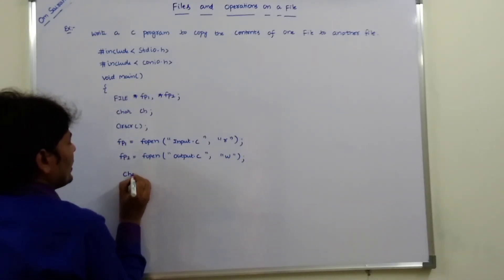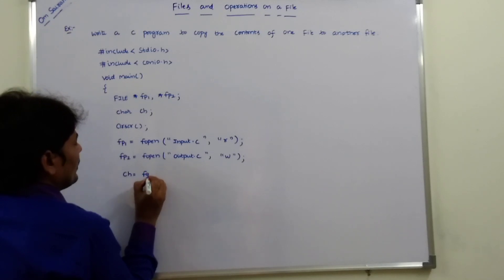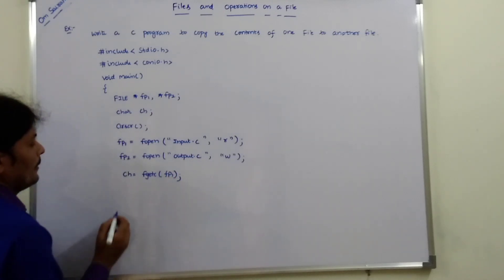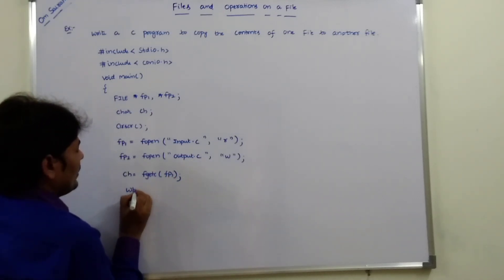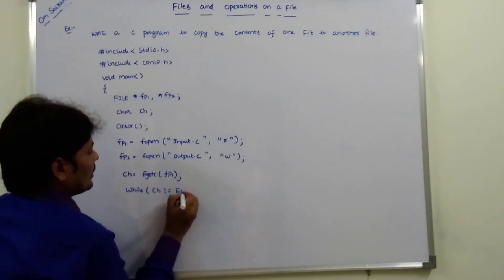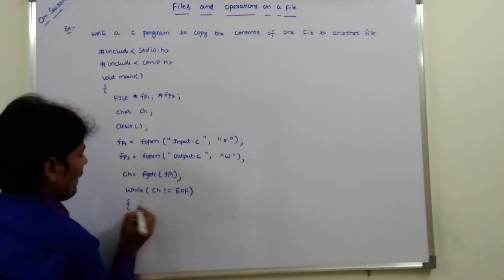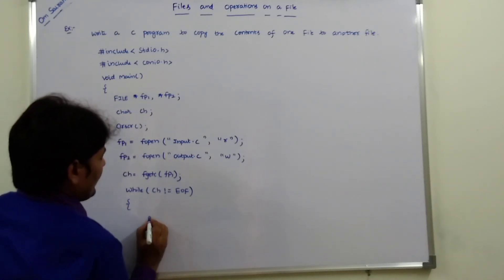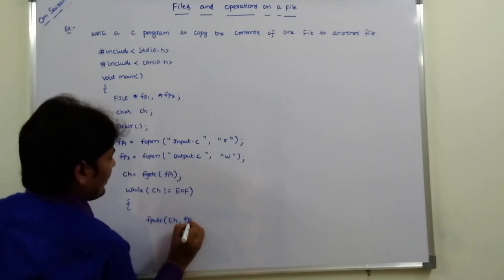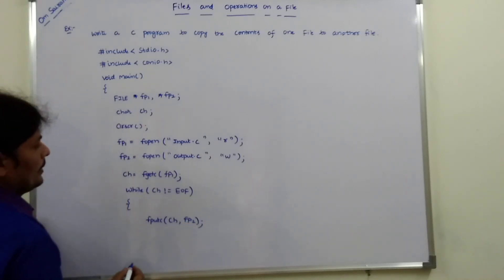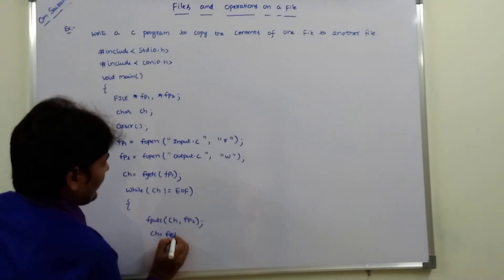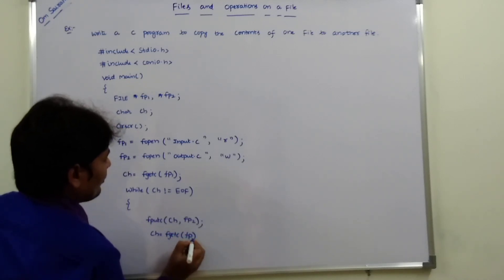So ch is equal to fgetc of fp1. While ch is not equal to EOF, fputc ch comma fp2. Again ch is equal to fgetc of fp1.